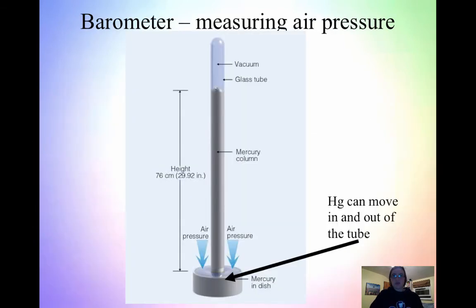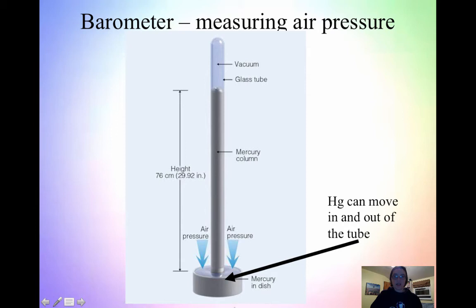With a barometer, this just measures air pressure. The way a barometer works is that air pressure pushes down on mercury in a tube, and the mercury can move in and out of the tube. Based on the air pressure, you measure the height of the mercury, and that tells you the atmospheric pressure.